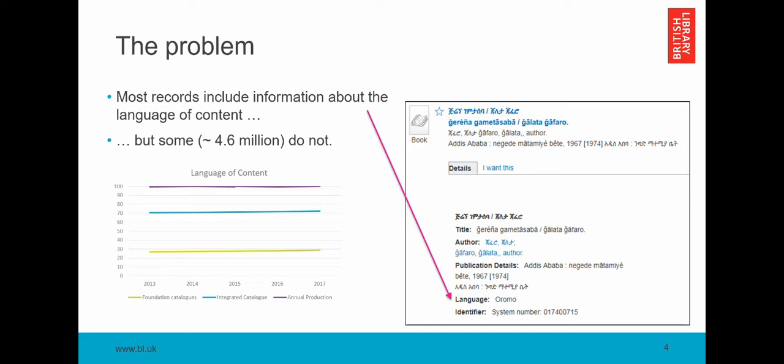But that's not good enough in the modern day and age. Our users want to be able to use the online catalog to search by language, to refine, filter and facet their searching by language. And when they pull up a metadata record, they expect to be able to see information about the language of content. So on the right hand side of this slide, you can see an example of a metadata record describing a book which is evidently written in a non-Roman alphabet. And the information in the metadata record tells us that this book is written in Oromo, which is really quite useful because if you don't speak Oromo, you might not recognize that alphabet and you might not know how to begin finding out what the content of the book says.